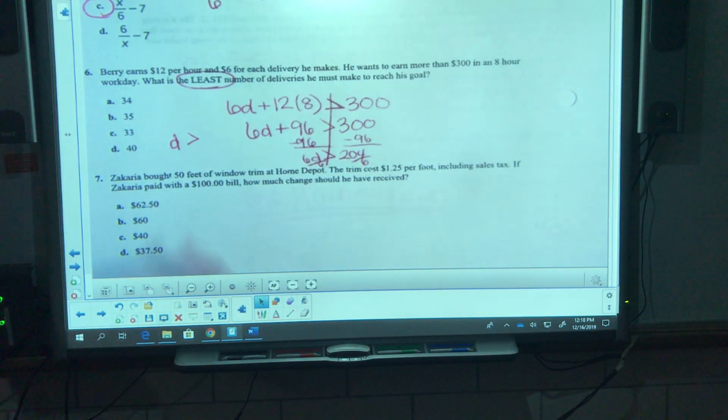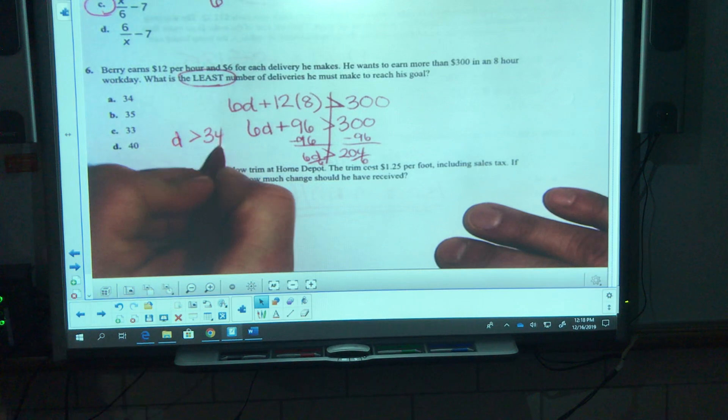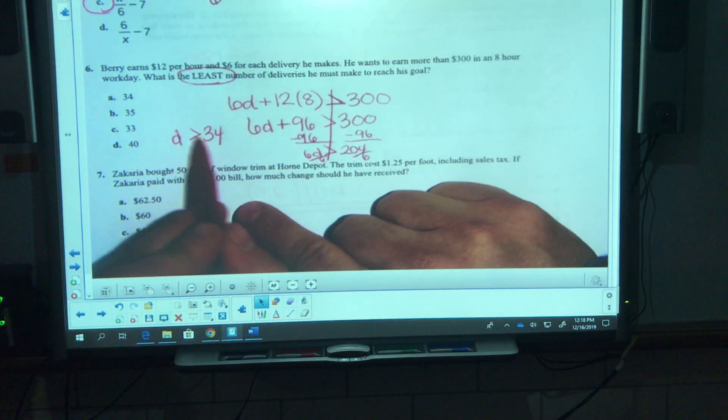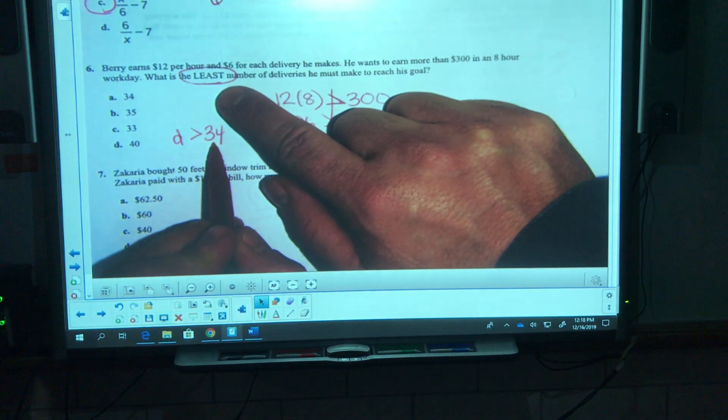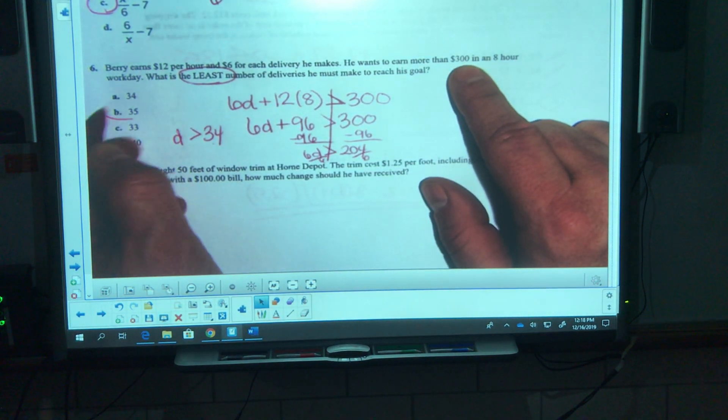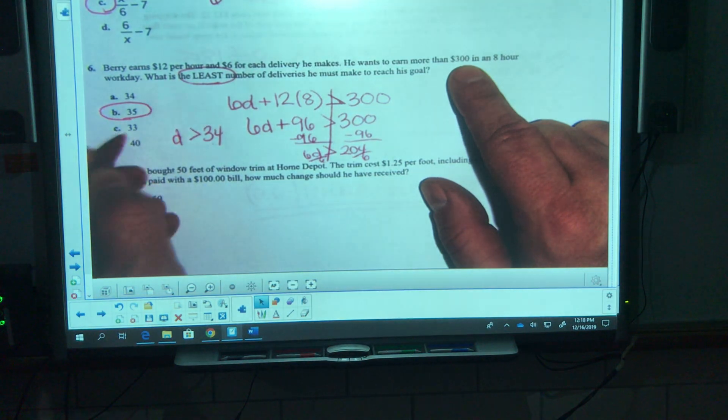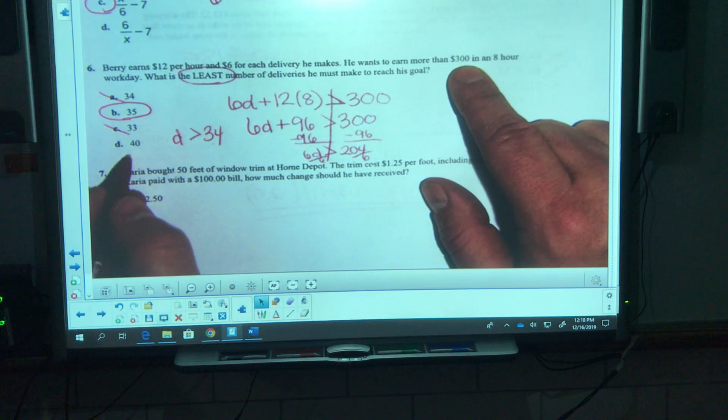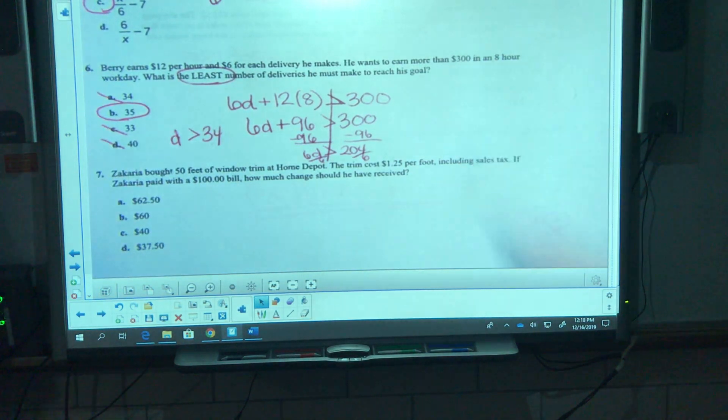Let's solve. I'll subtract 96. 6d is greater than 204. Divide both sides by 6. d is greater than 34. Now stop. A lot of people are going to get sucked into letter a, but letter a is not the answer. d has to be greater than 34, so the least amount to make his more than 300 goal is going to need to be 35. 40 would get him his goal but it says what's the least amount.